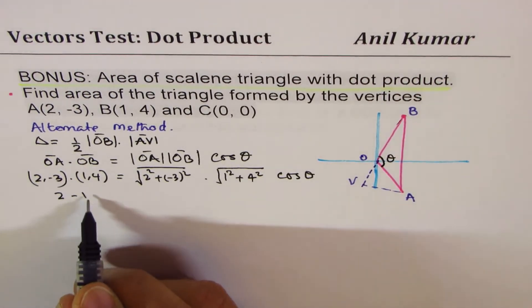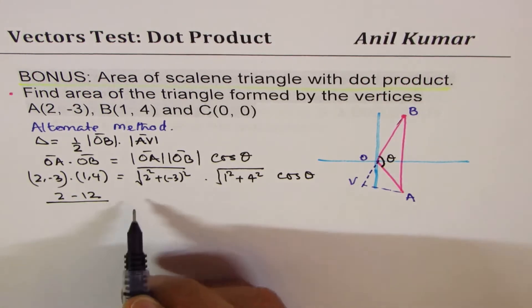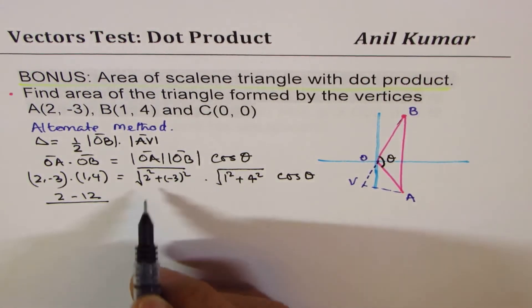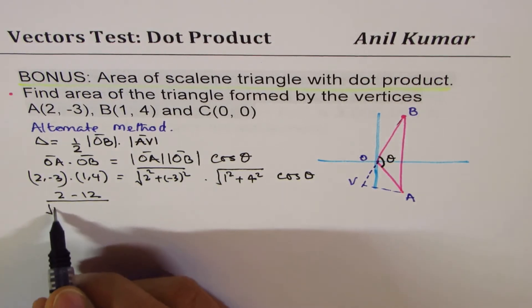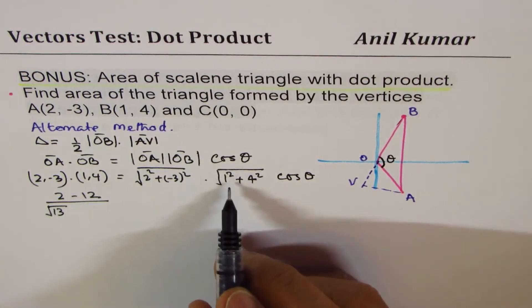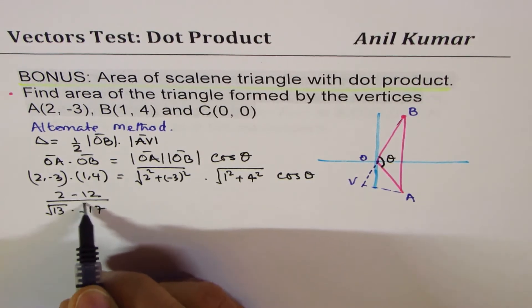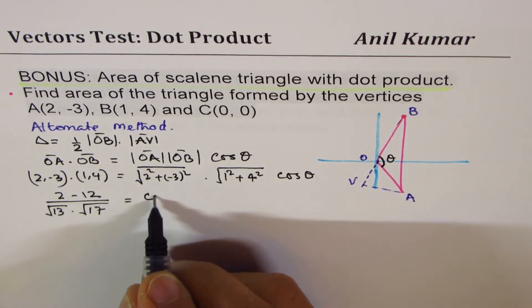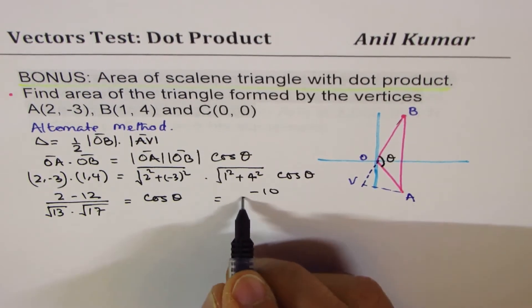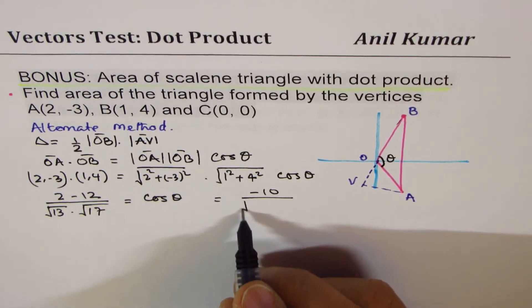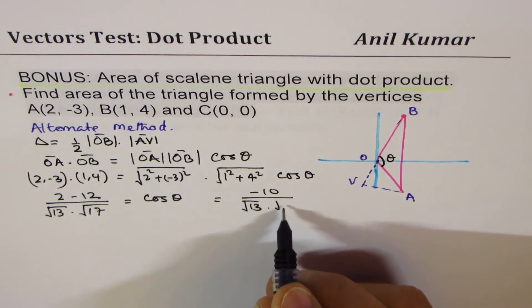Now this is 2 - 12, just as we did last time, and we'll divide by these magnitudes, which is √(4 + 9) = √13, and √(1 + 16) = √17. That equals cos θ, which clearly is -10 over √13 times √17.